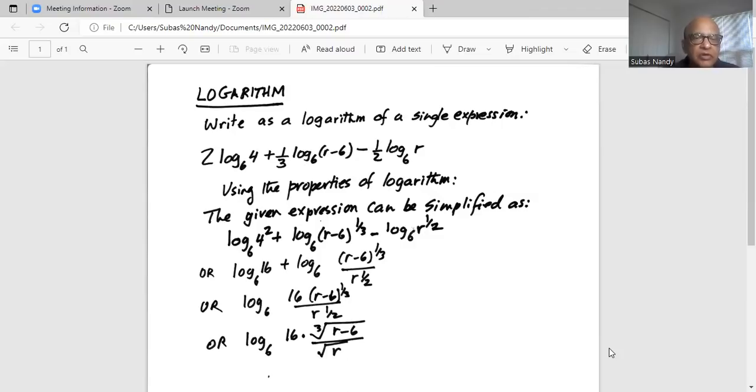The first term we are going to work on the first term when it is 2 multiplied by logarithm of 4 base 6. That 2 can be transferred as an exponent of 4. So it becomes logarithm of 4 exponent 2 base 6. The multiplication 2 factor becomes an exponent of 4.